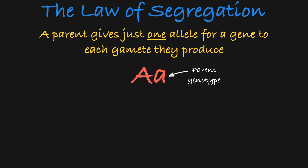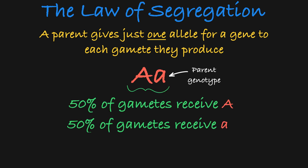Which of the parent's two alleles is given to an offspring is random. When a parent is heterozygous, it will be equally as likely to give either allele to its offspring.